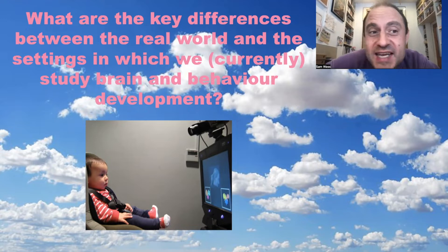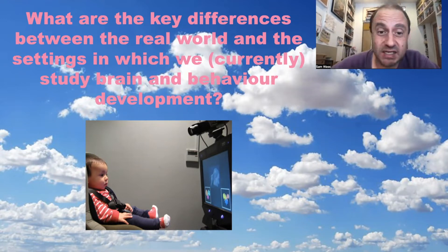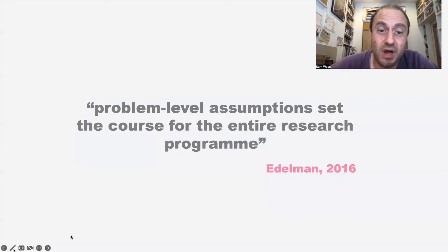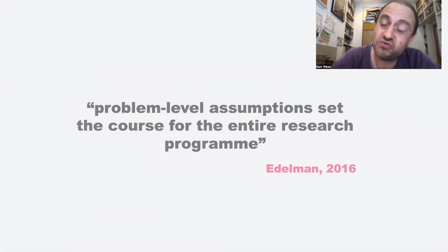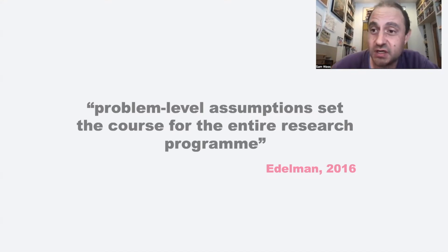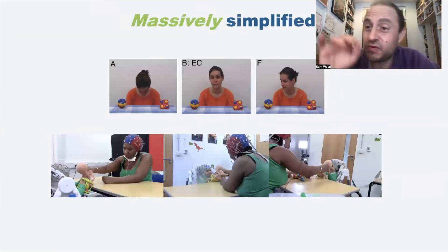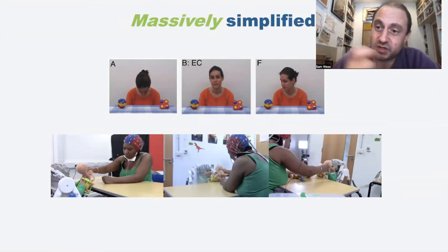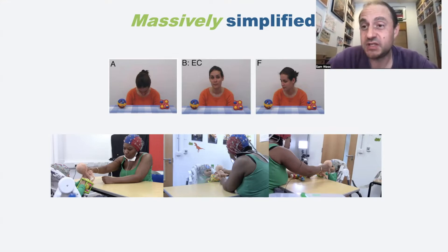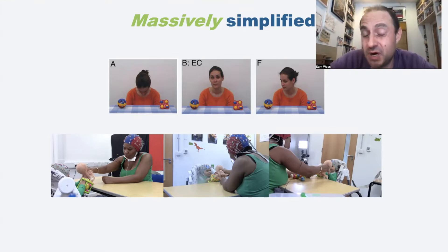So what are the key differences between the real world and the settings in which we currently study brain and behaviour development? This is important because getting the question right to start with informs what type of answer we receive. If we ask the wrong question, then the answer we're going to get is never going to be useful. The first and most obvious way in which experimental tasks are different to the real world is that they're simpler.